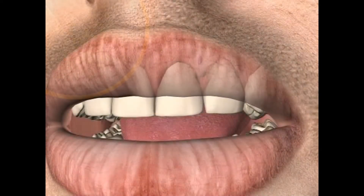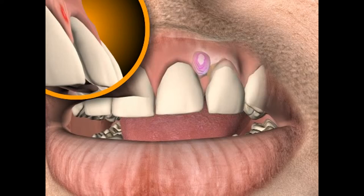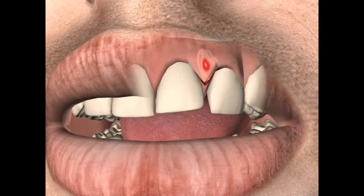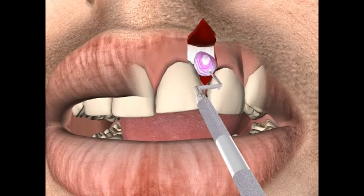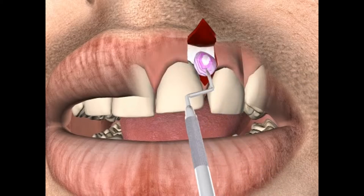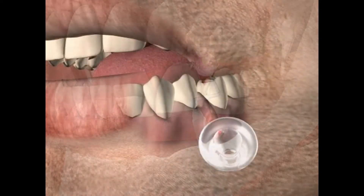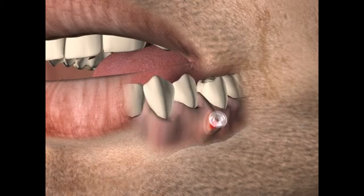In general, the cystectomy is the therapy of choice for cysts in the area of the head or neck, with the exception of very large cysts or if important anatomical structures are located in close proximity to the cyst, which could then be damaged during the removal. In such cases, a so-called cystostomy is first performed. More on that in the video entitled Cystostomy.